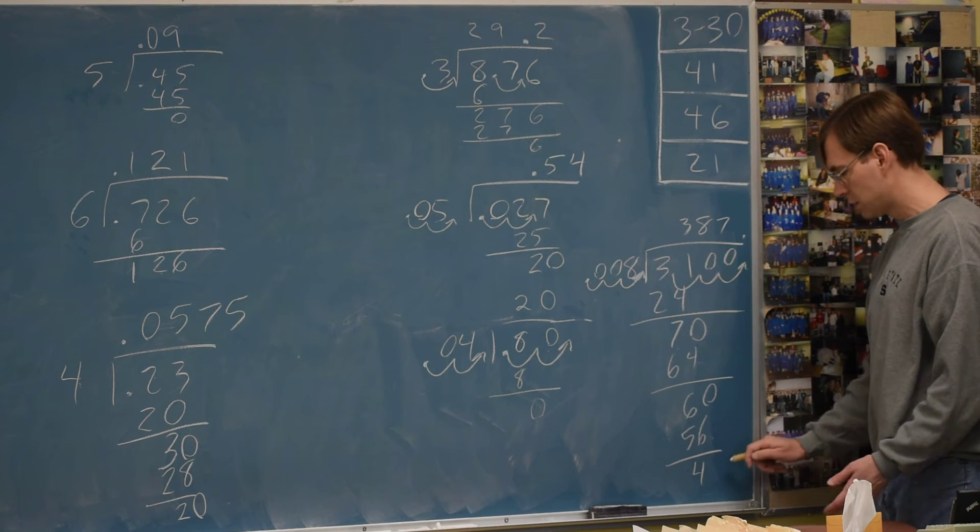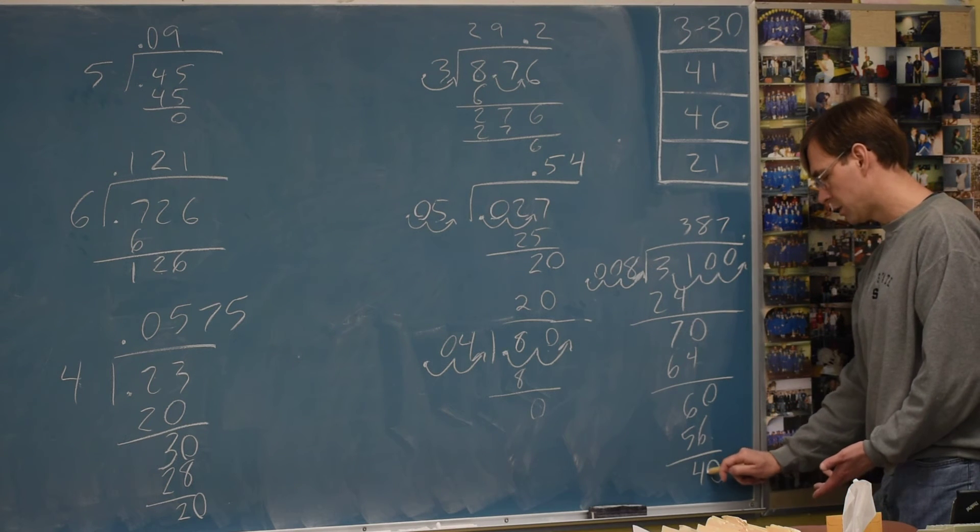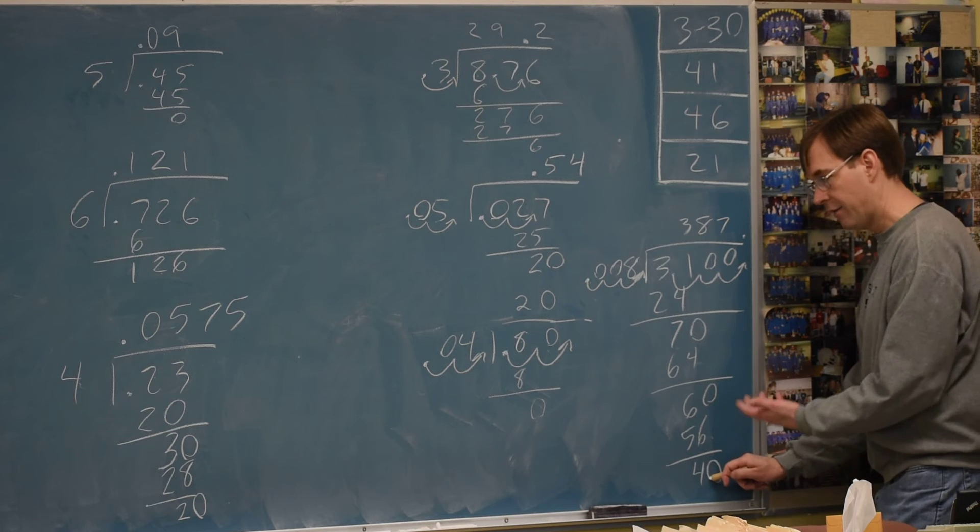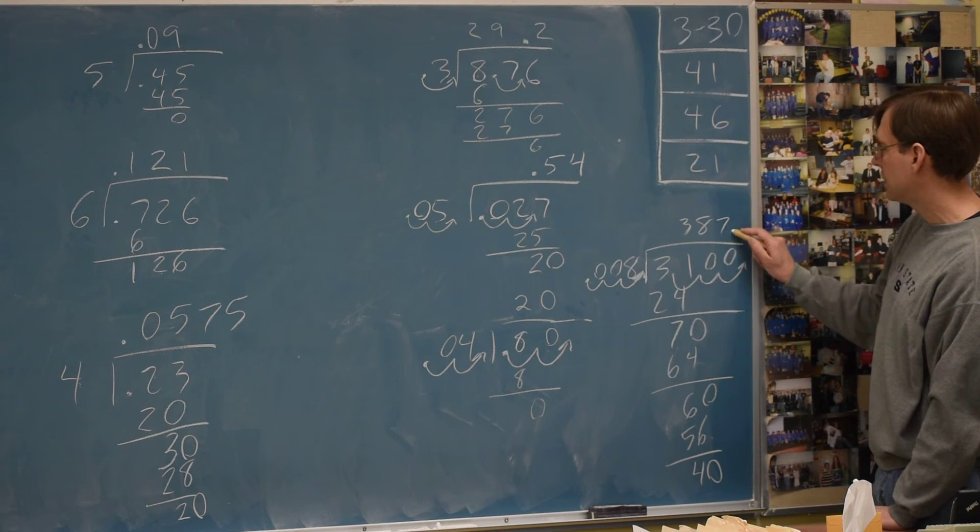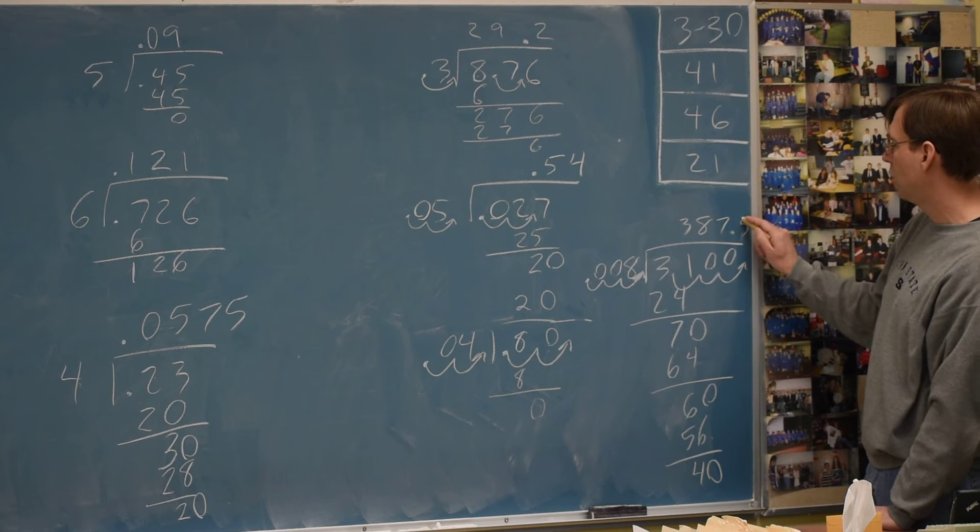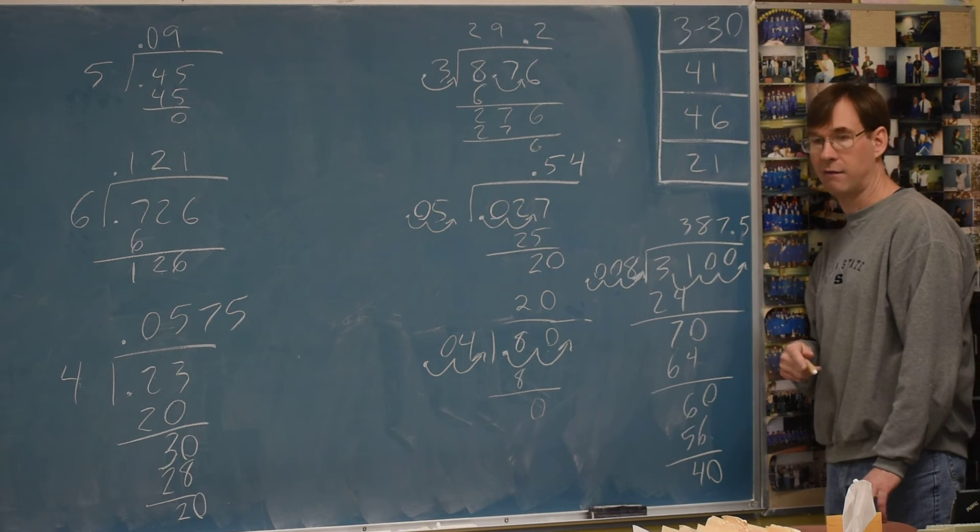And you want to be done because we ran out of numbers. But we're not. We have a four. So when we're not done and have numbers left, add a zero. Eight into forty is going to be a five. So I just need to nudge that over a bit. And we'll go 387.5. And that's it.